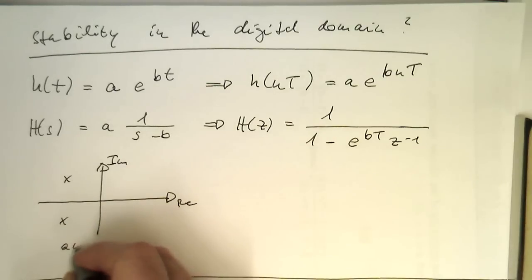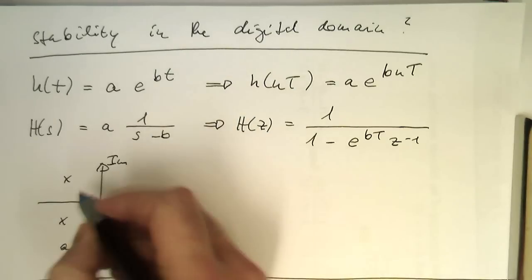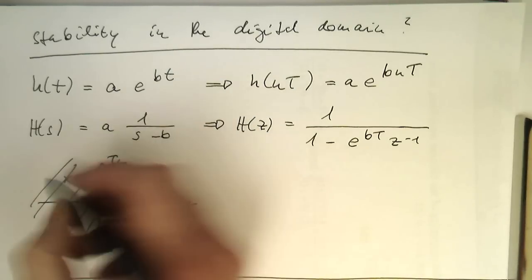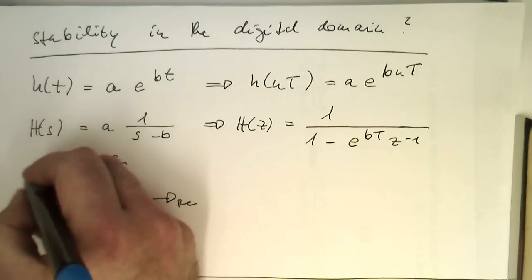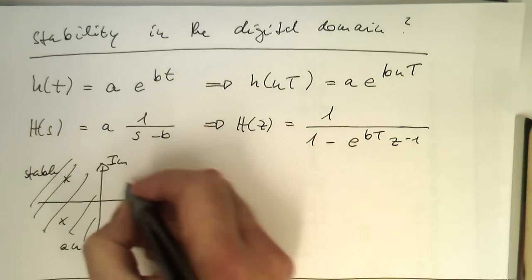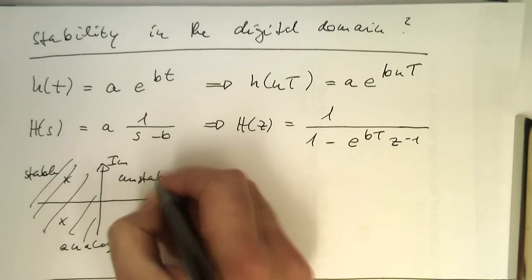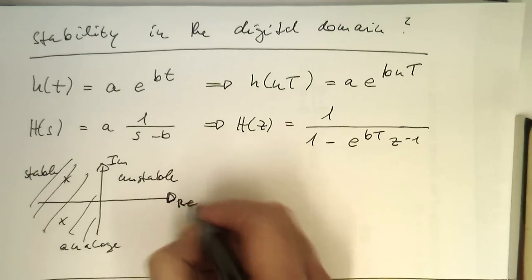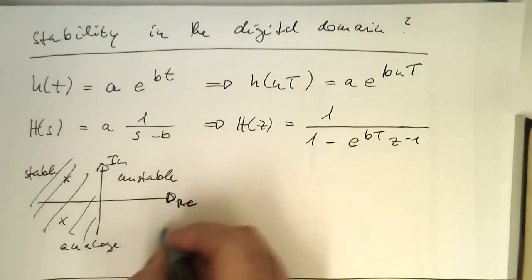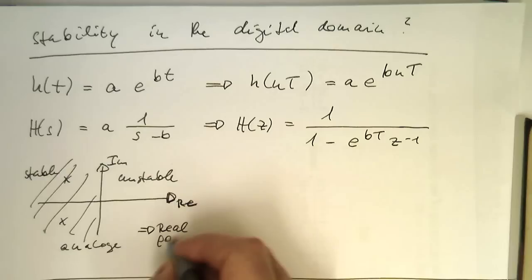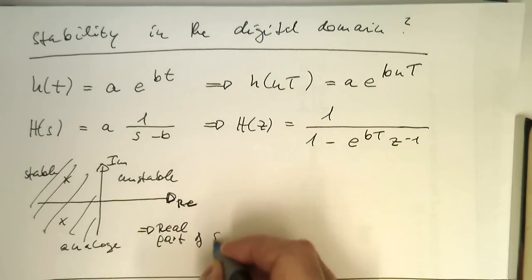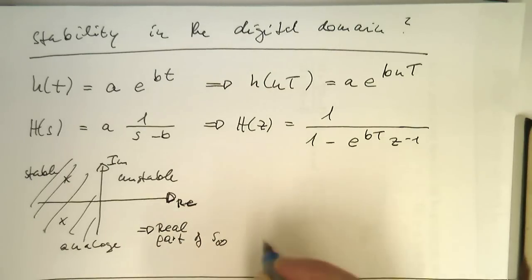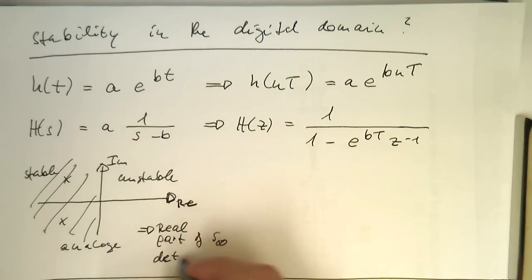Analog one. That they are here, that they are stable, and this region is here unstable. This meant that the real part of this one here defines this here. This means the real part of our s infinity determines stability.